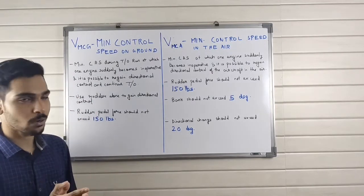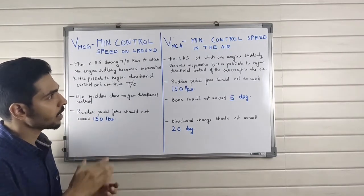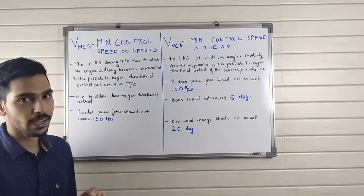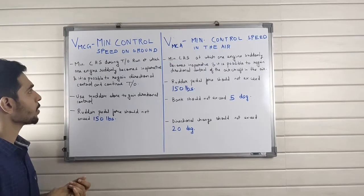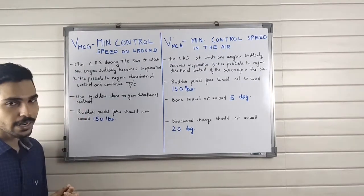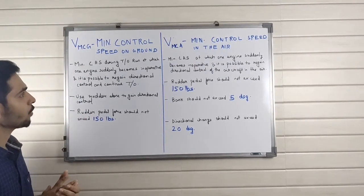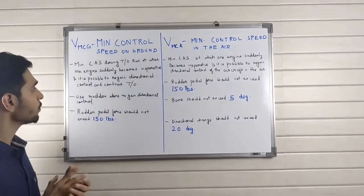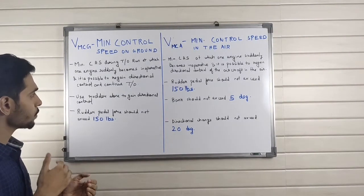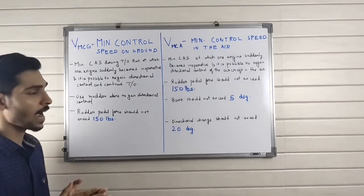VMCA is the minimum control speed of the aircraft in the air. If we look at VMCG, it is the calibrated airspeed during takeoff run at which one engine suddenly becomes inoperative, and it is possible for the aircraft to regain directional control and continue takeoff.